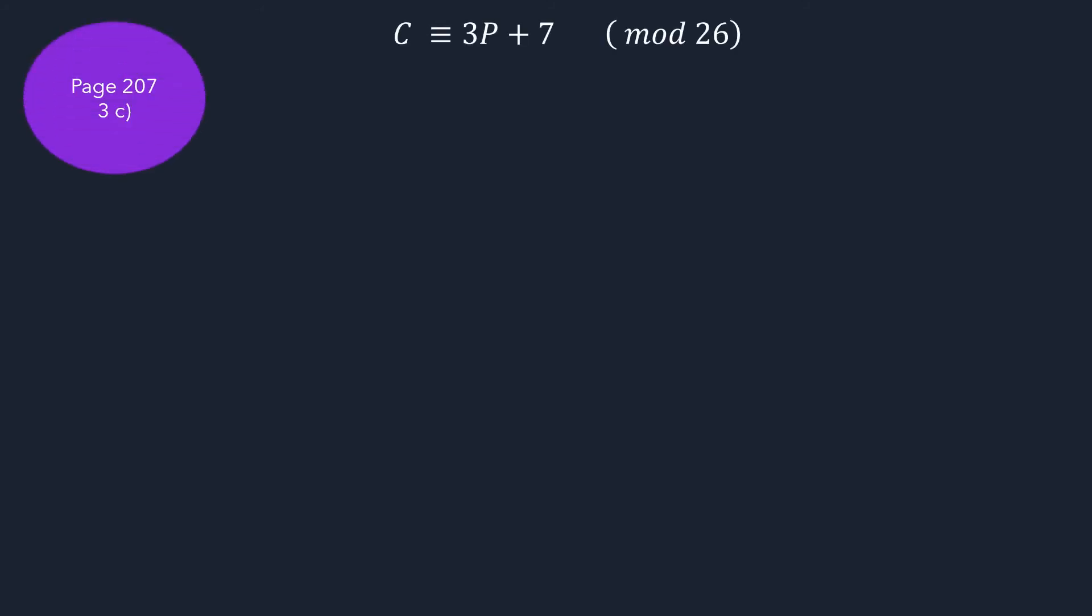Now to decrypt, let us take another example. Let's take C equal to 3P plus 7. So if C is 3P plus 7, to solve for P, we need to multiply by the inverse of 3, which is 3 inverse.